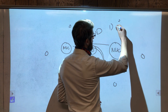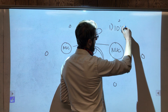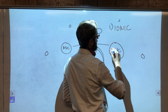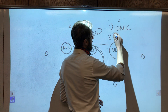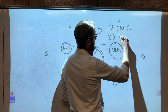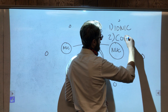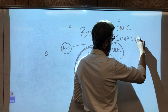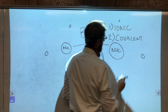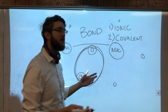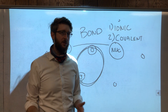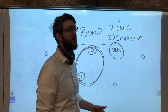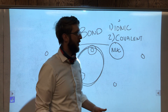There are two major kinds of bonds that we're going to talk about today: ionic bonds and covalent bonds. So what's the difference between these two? Let's talk about it.